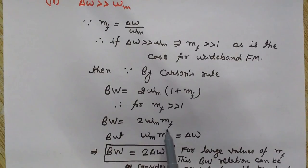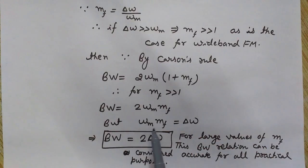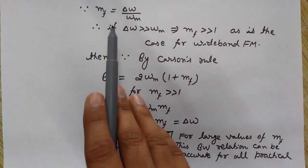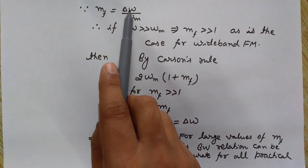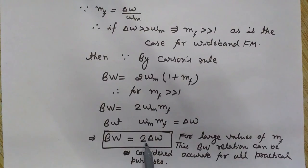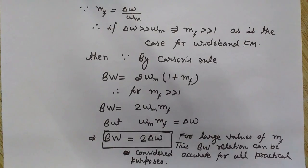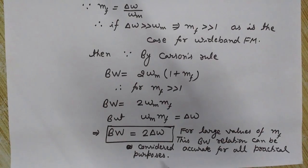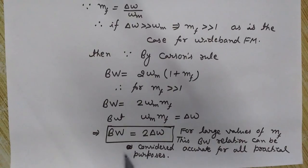We know that ΩM × MF = ΔΩ from the modulation index relationship. So replacing ΩM × MF with ΔΩ, the bandwidth becomes 2 × ΔΩ. For all practical purposes, this relationship Bandwidth = 2ΔΩ is valid when the value of MF is very large. In the next videos we will see more topics related to frequency modulation.